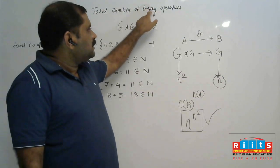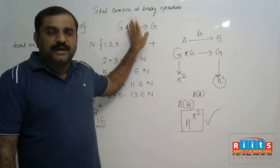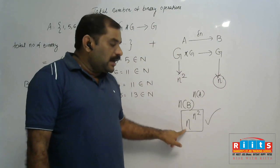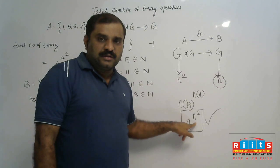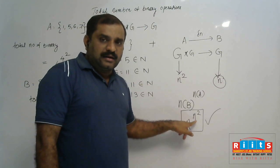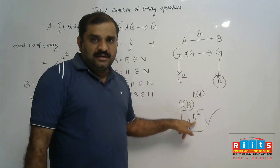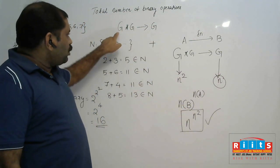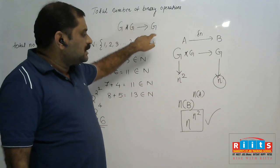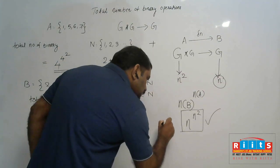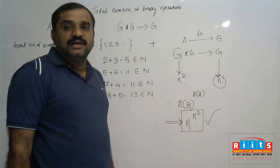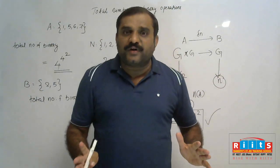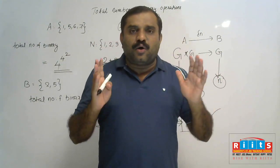So the formula for total number of binary operations defined on a set is n raised to n squared, where n is the number of elements in the set. Binary operation means G star G is mapped into G itself. Use this formula: n raise to n squared gives the total number of different binary operations defined on a set.